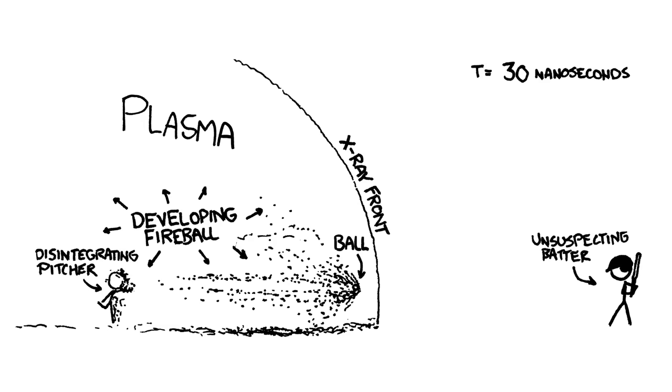This would result in a flood of X-rays that would spread out in a bubble along with exotic particles and plasma inside, centered on the pitcher's mound, and that would move away from the pitcher's mound slightly faster than the ball.